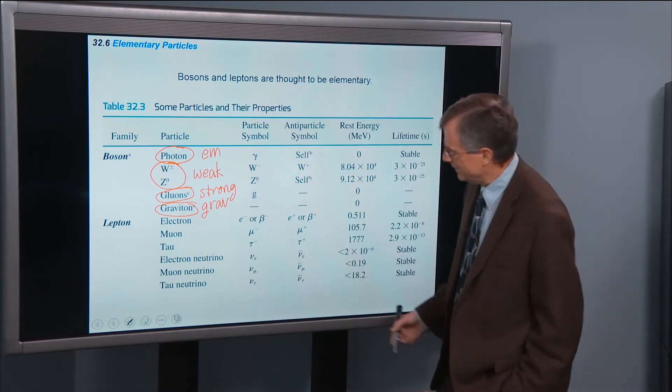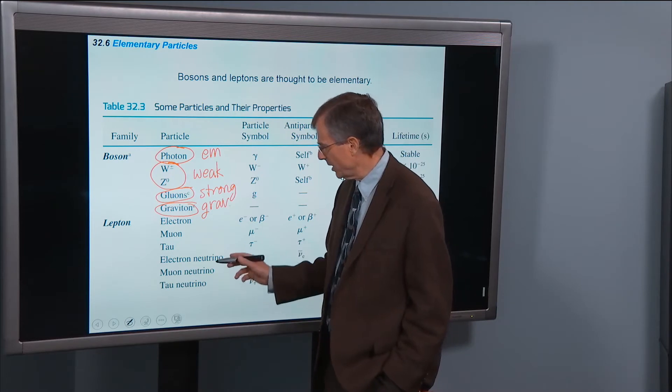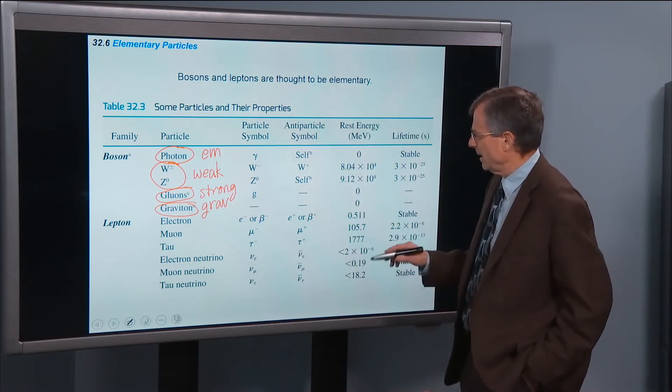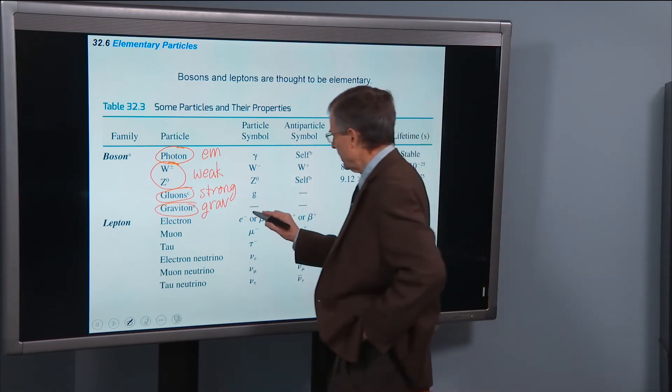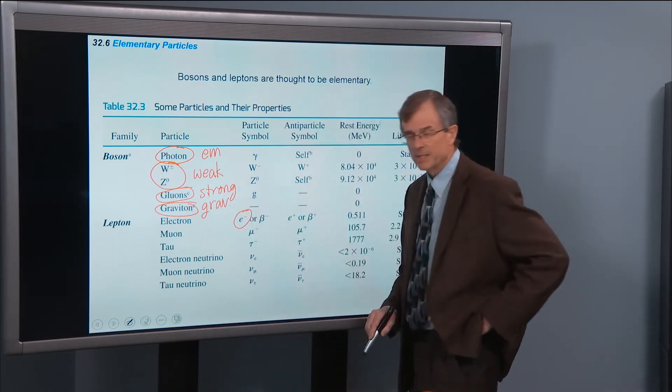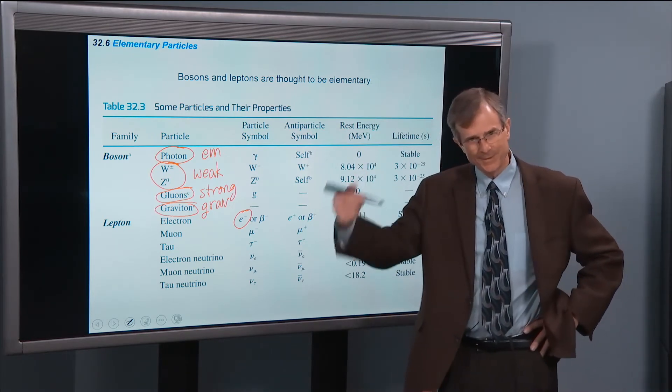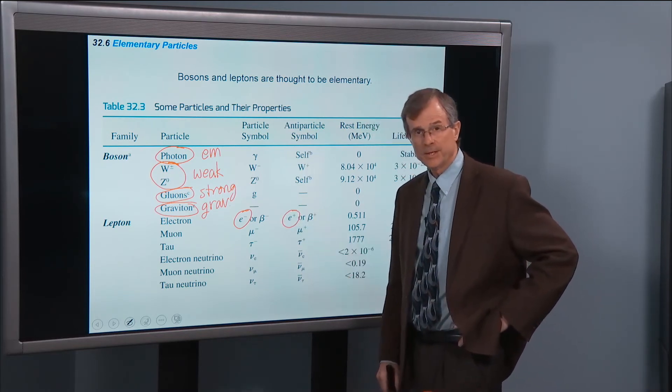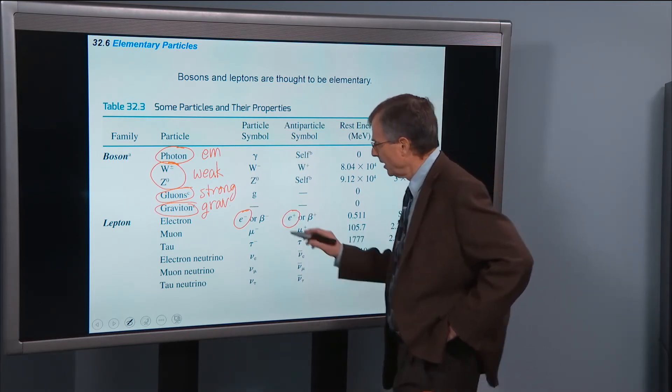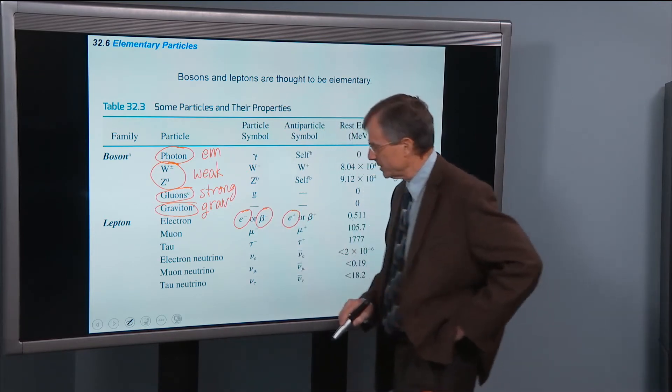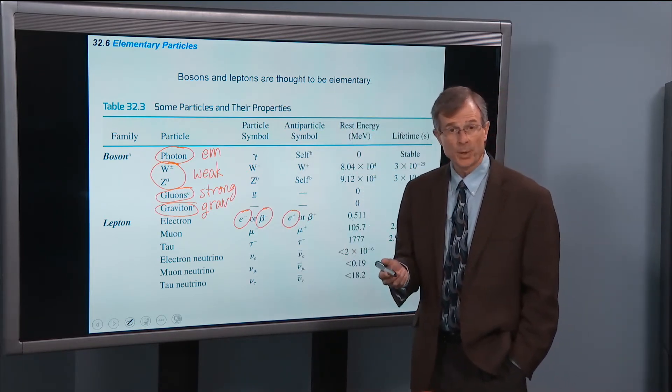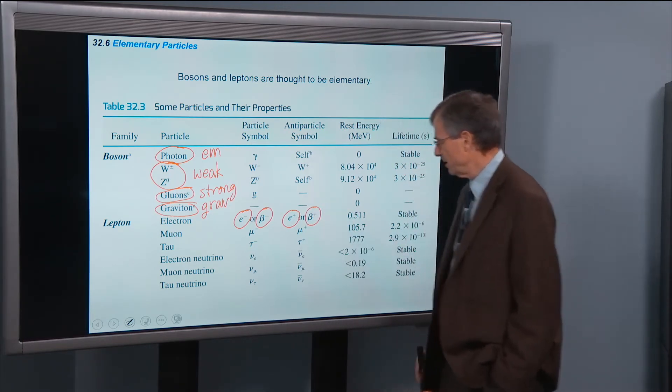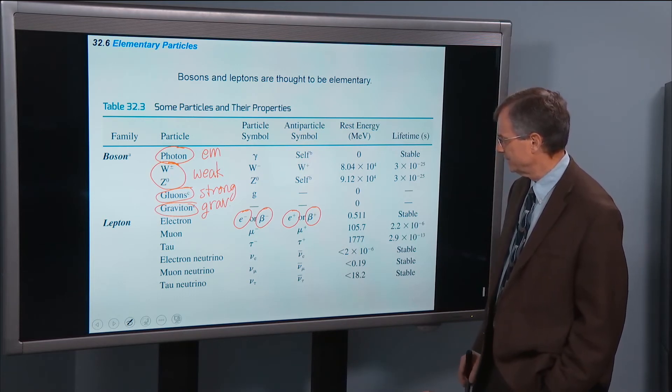Leptons: electrons, muon, tau, electron neutrino, tau neutrino, as well as their antiparticles. So an electron is generally denoted as E minus in the notation of particle physicists. The positron is denoted as E plus. Also, the electron is denoted as beta minus. It's a beta ray, like we talked about in radioactivity. Beta plus is a positron.